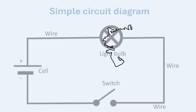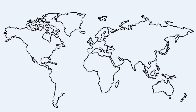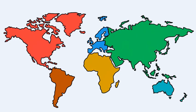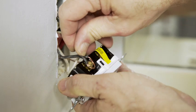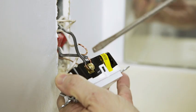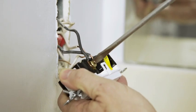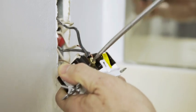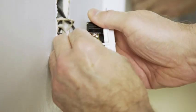Circuit diagrams are the same all over the world so that everyone can understand them, no matter what language they speak or where they live. Think of it like the language of electricity — it uses special symbols to represent things like batteries, switches, and lamps. Because these symbols are universal, electricians, engineers, and students from any country can look at the same diagram and understand how a circuit works. This helps people work together on projects and makes it easier to learn and share ideas about electricity.